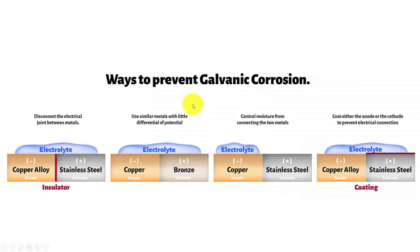Ways we can prevent a galvanic cell from happening: if we have two different materials, copper and stainless, and our anode here is being copper, if we have an electrolyte that can set up a galvanic cell, we can put an insulator. Maybe we put a piece of rubber or something between the two, and that can disconnect the electrical connection there.